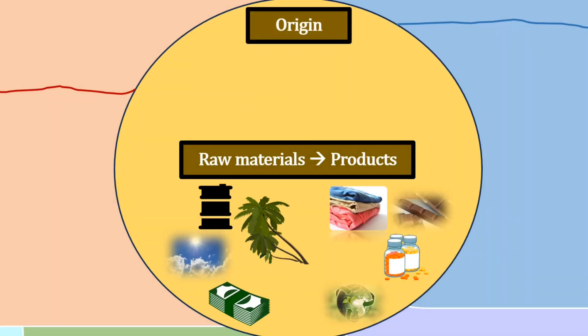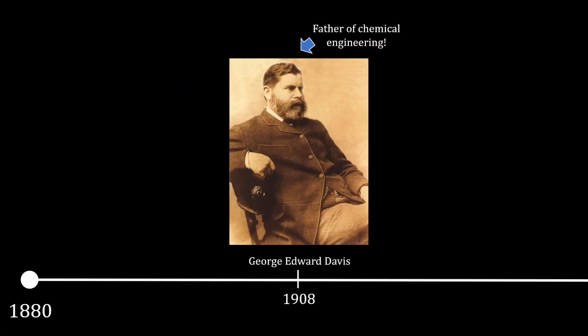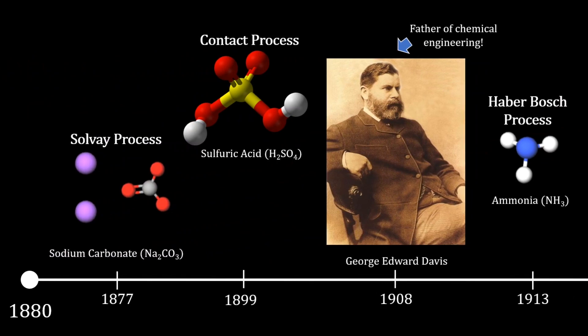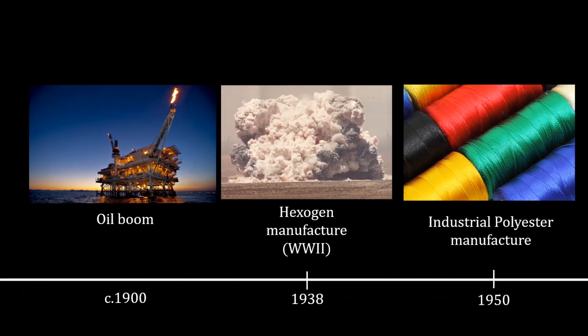Starting with the origin, chemical engineering emerged in the late 19th century from industrial demands and advances in chemistry and technology. This is also when the foundations were emphasised by George Edward Davis. Early chemical processes focused on production of soda ash or sodium carbonate, ammonia and sulphuric acid, progressing towards a focus on synthetics and explosives during the world wars, spurred on by the crude oil advance.